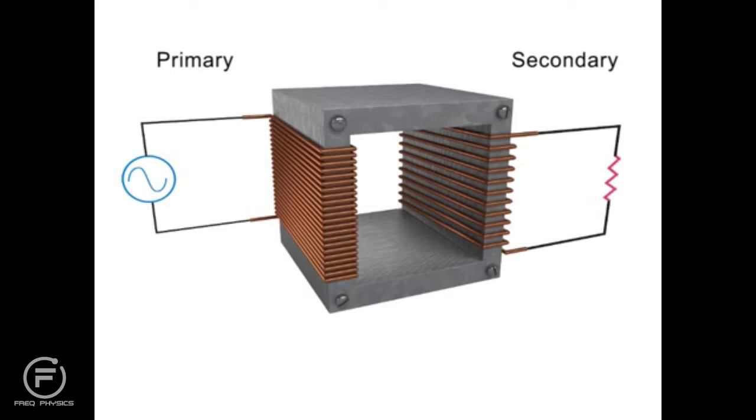Transformers can either step up or step down a voltage. In a step down transformer, the number of turns in the primary coil is greater than the number of turns in the secondary coil.